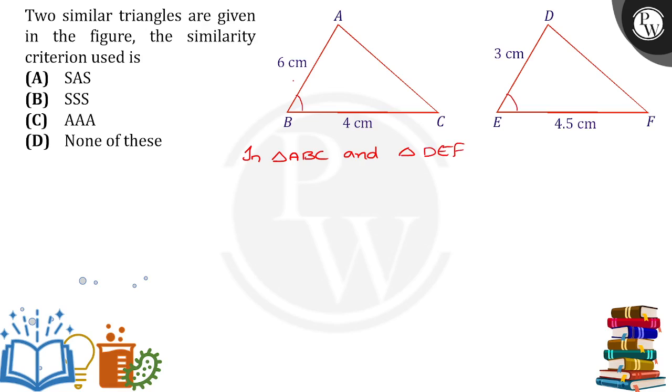Now, in triangle ABC, if I take BC side, BC by - I need to take ED side. BC by ED, because BC is 4, ED is equal to 3, 4 by 3 will come.